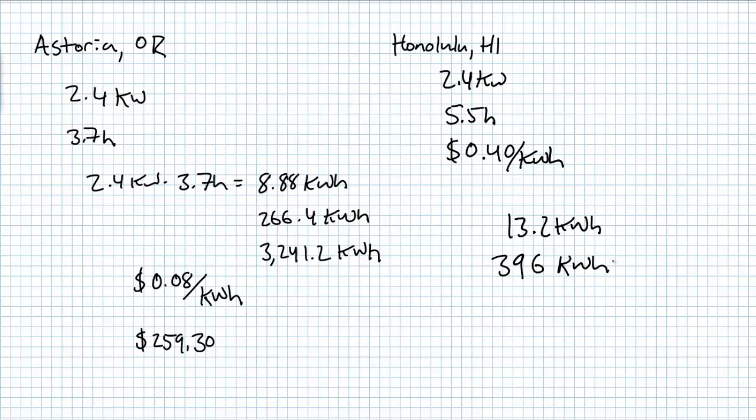A 30 day month would produce 396 kilowatt hours. And a 365 day year would generate 4,818 kilowatt hours. If the utility credited you 40 cents per kilowatt hour, you would expect your annual electric bill reduced by $1,927.20.